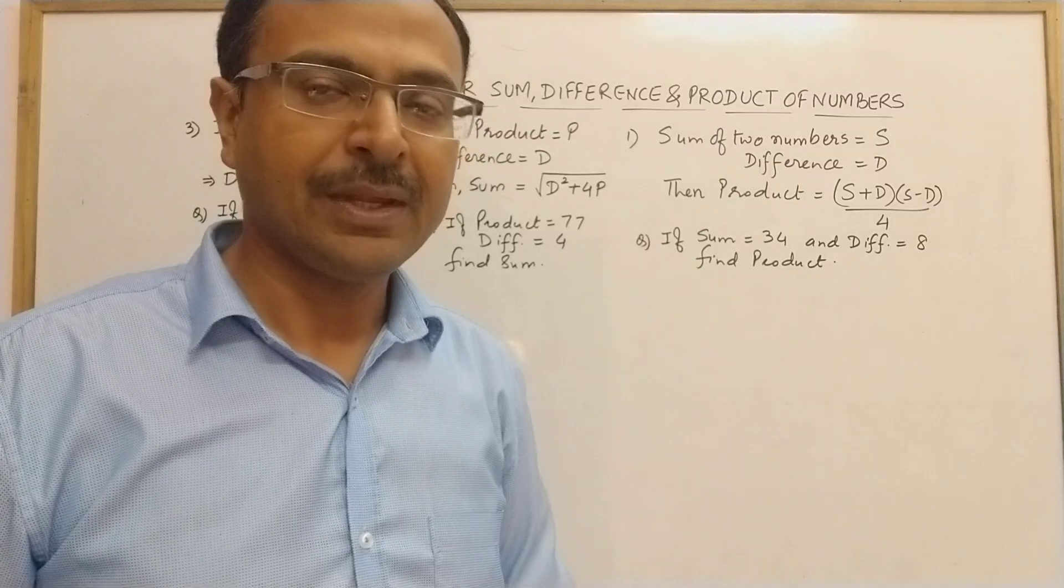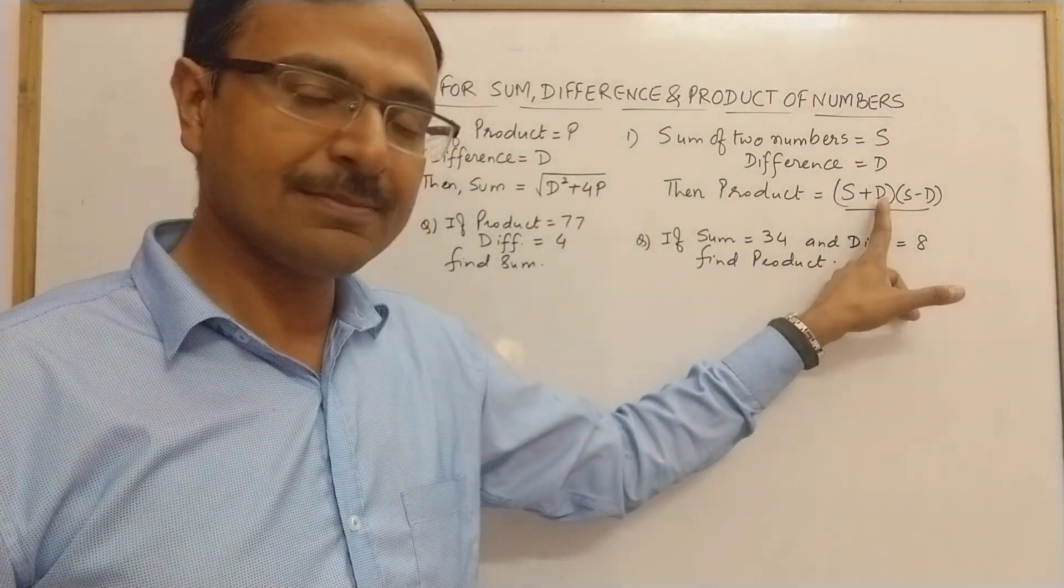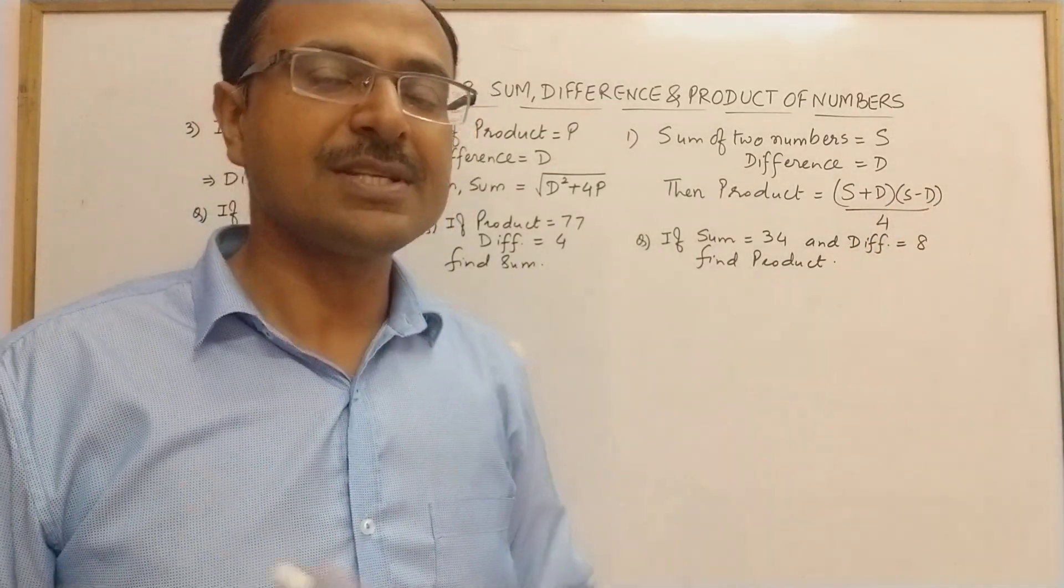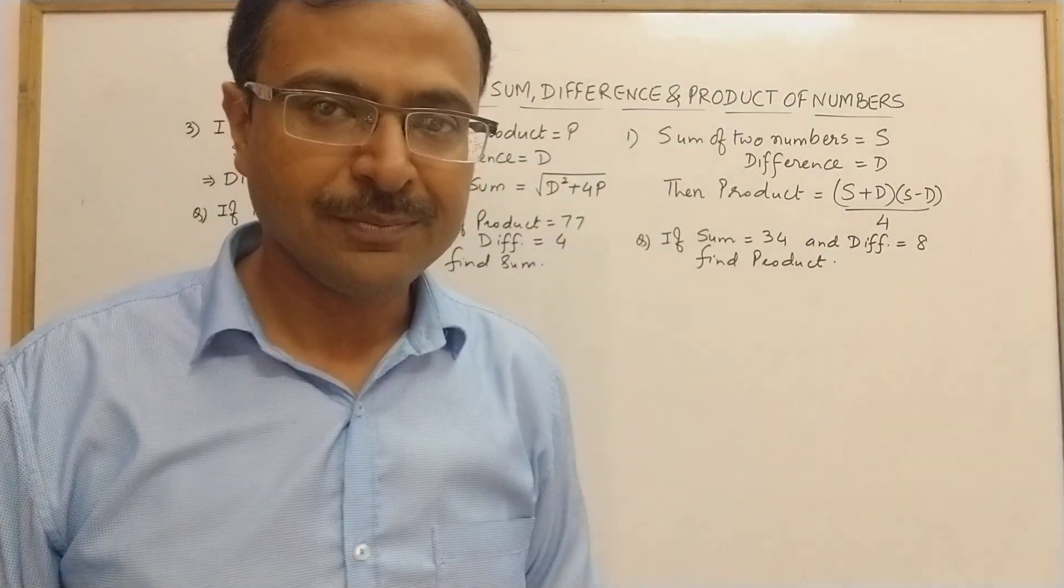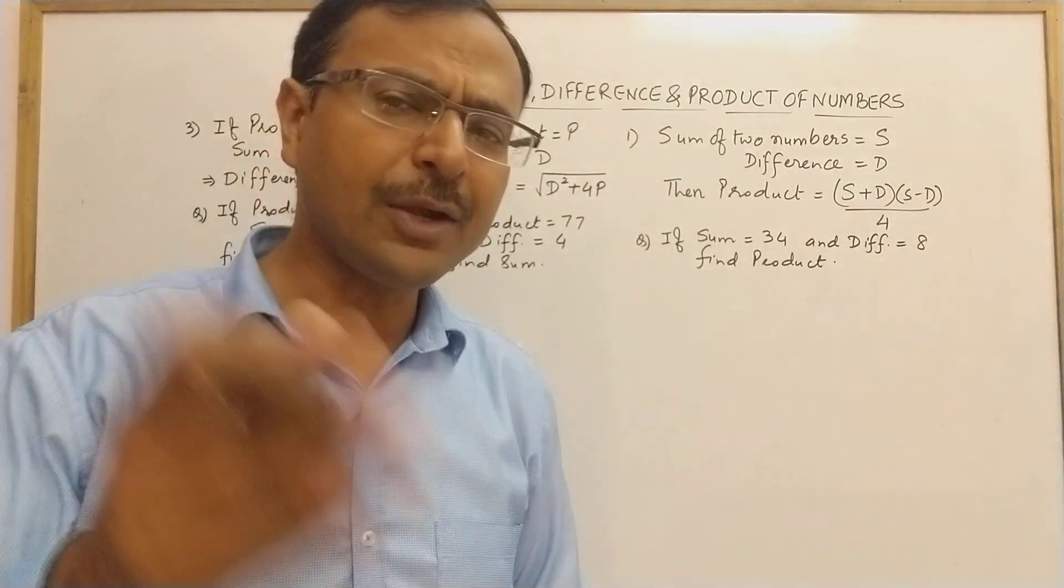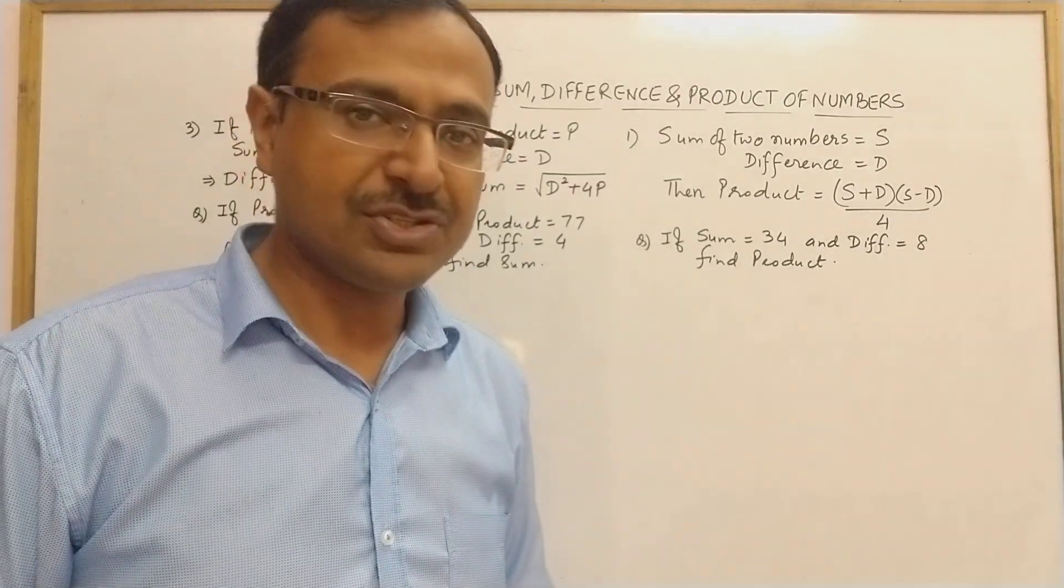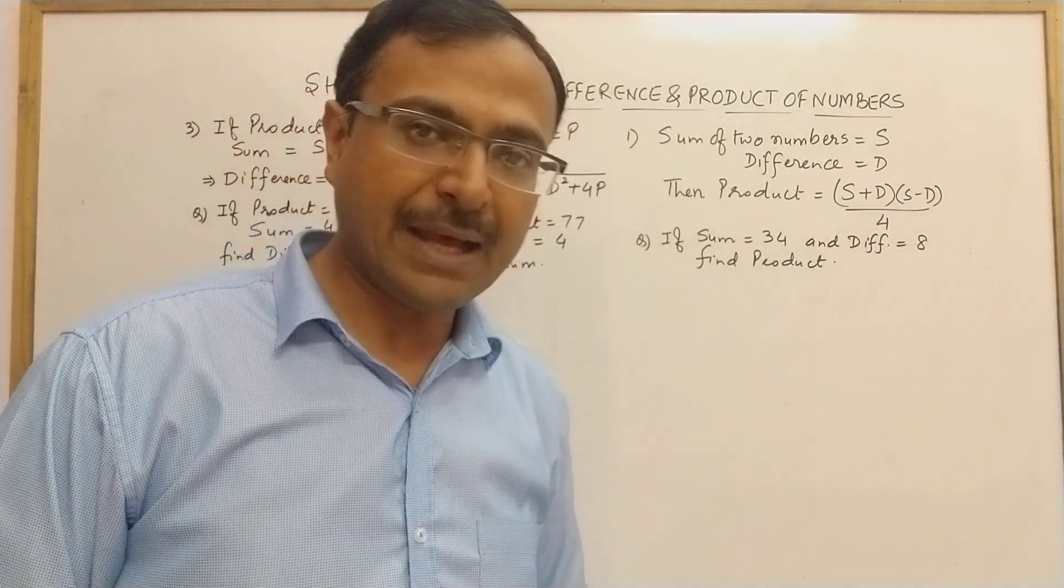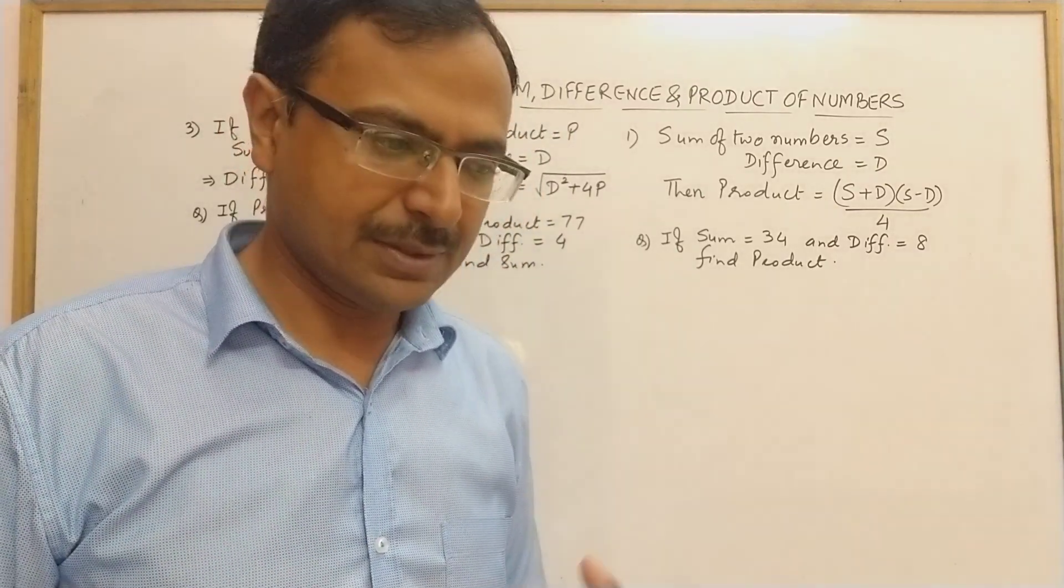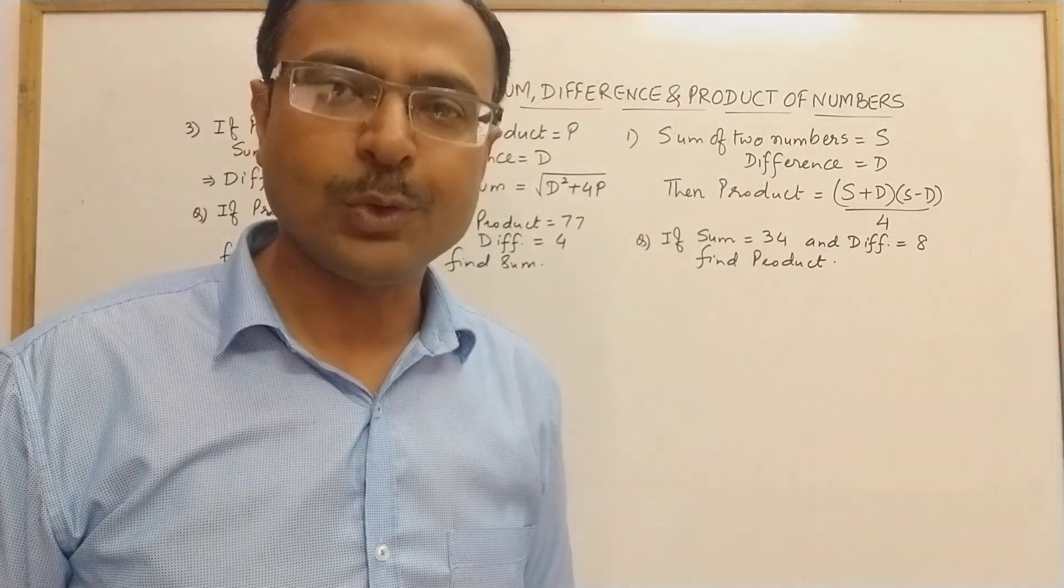You can find the product if sum and difference are given by adding the sum and difference, then subtracting them, multiplying those results and dividing by 4. These are derived relationships with skipped steps from the traditional method.